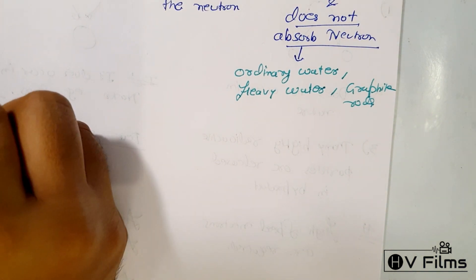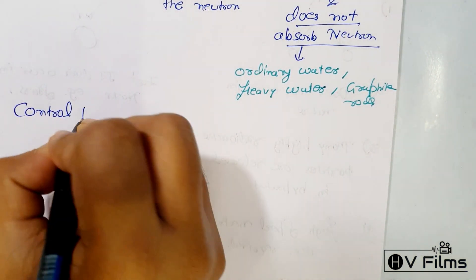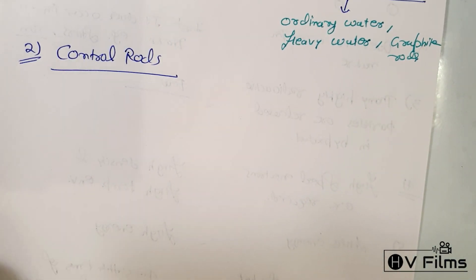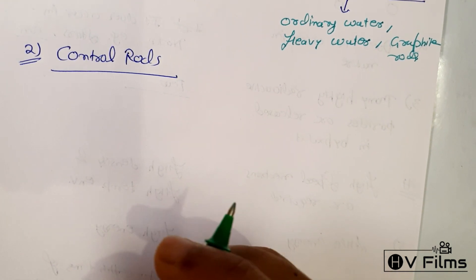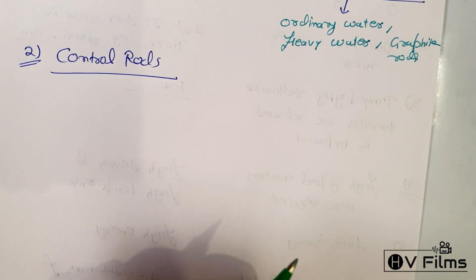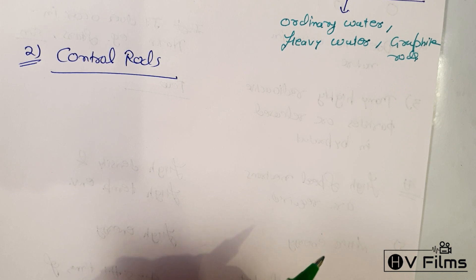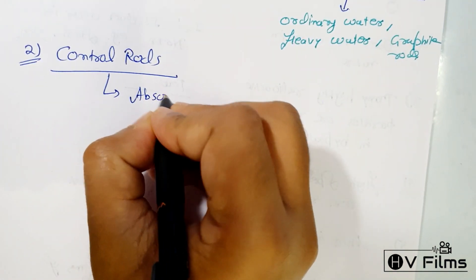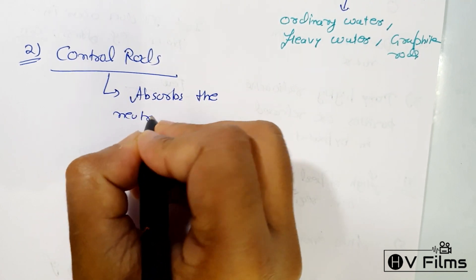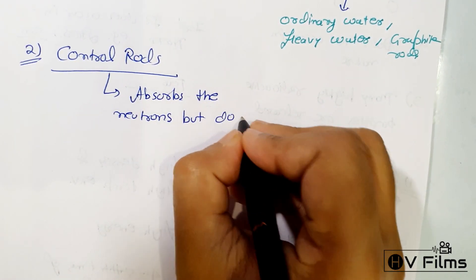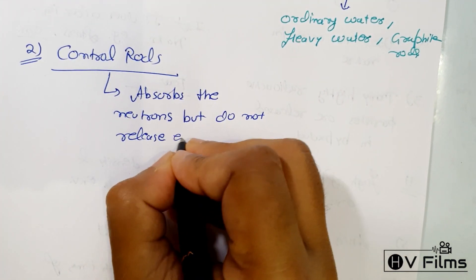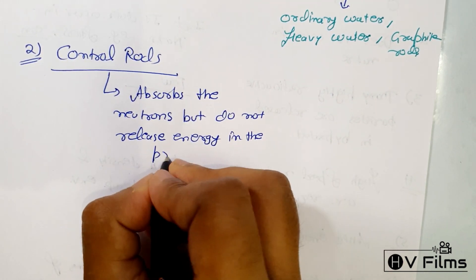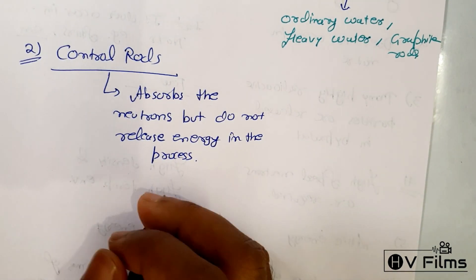Next we will study about control rods. In a nuclear reactor, only one of the neutrons released from uranium fission is used to produce another fission reaction. The other neutrons are absorbed by the control rods. The control rods absorb neutrons but do not release energy in the process.